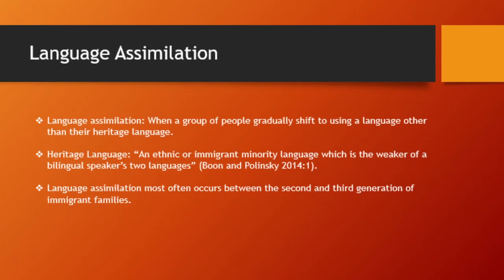Language assimilation is the process of a group of people gradually shifting to using a language other than their heritage language. A heritage language is an ethnic or immigrant minority language which is the weaker of a bilingual speaker's two languages. Language assimilation of immigrant families in the U.S. usually occurs between the second and third generation, the first generation being the immigrant who comes to the United States knowing little to no English.